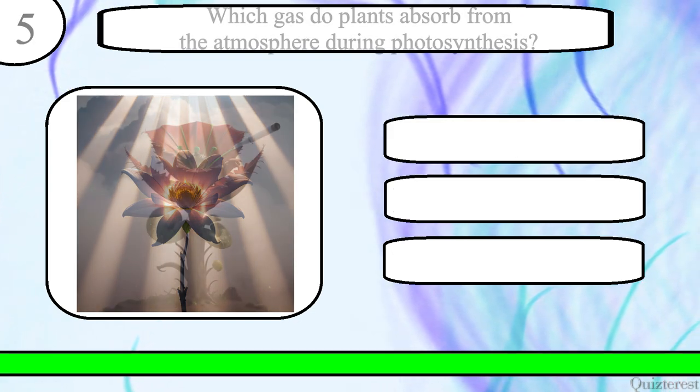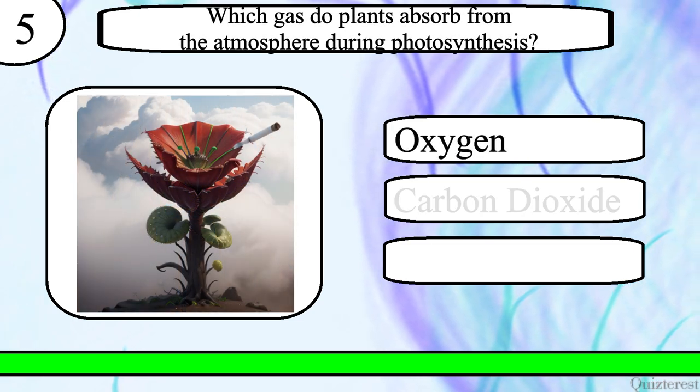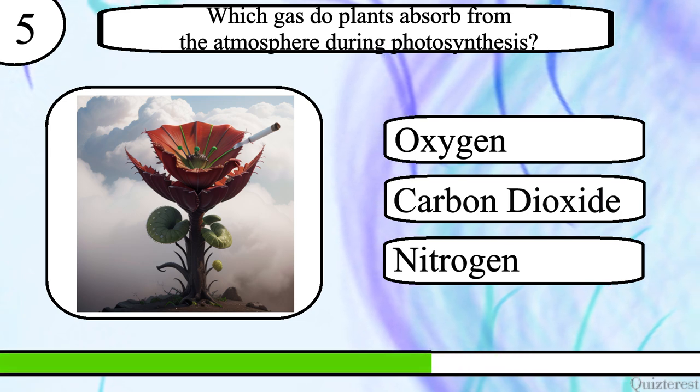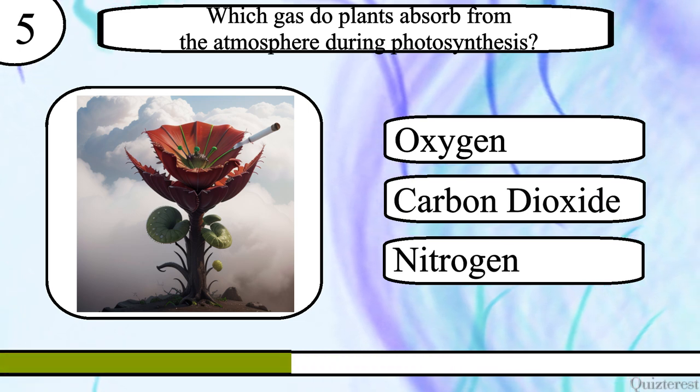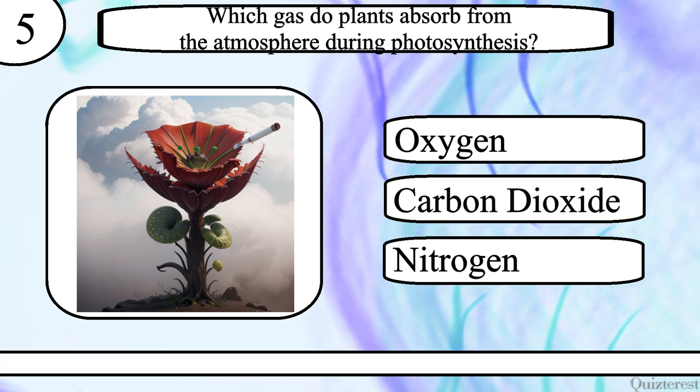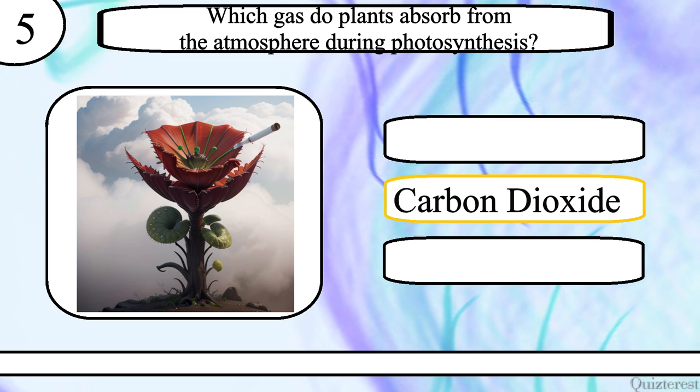Question 5. Which gas do plants absorb from the atmosphere during photosynthesis? Oxygen, carbon dioxide or nitrogen? The correct answer is carbon dioxide.